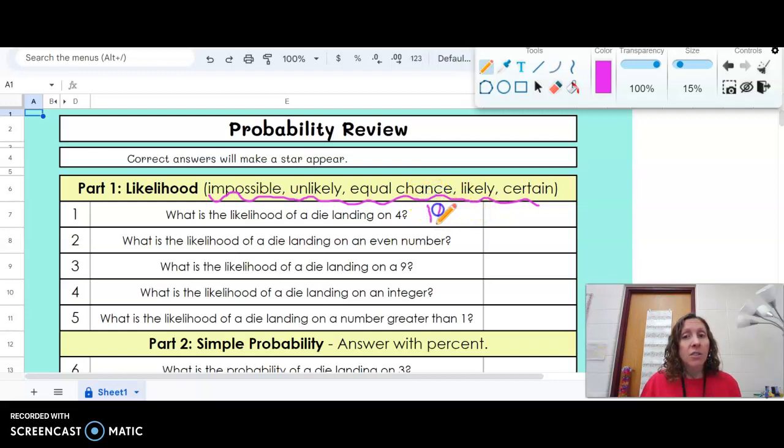So our fraction would be one sixth. You might be able to figure out if it's impossible, unlikely, etc. If not, in a calculator, do one divided by six. Then move the decimal two to the right, and then compare the percent. 0% is impossible, 100% is certain, exactly 50% is equal chance. Anything in between 0 and 50 is unlikely, so 1% or 49%. And then anything in between 50 and 100 is likely. So this one would be about 17%, so that one would be unlikely.